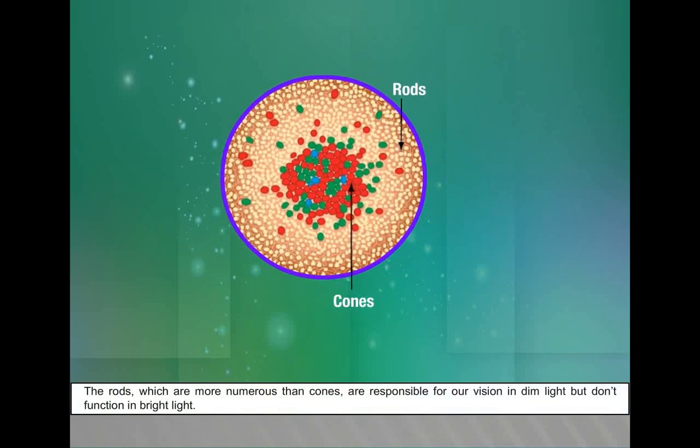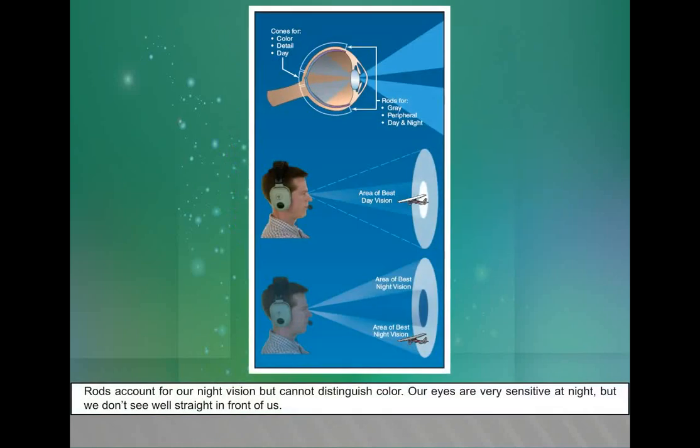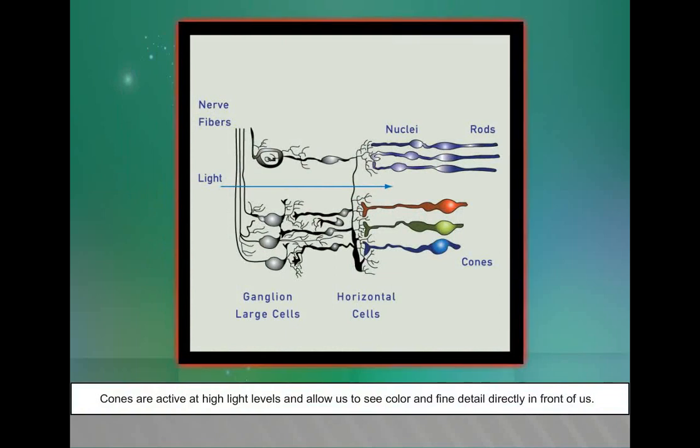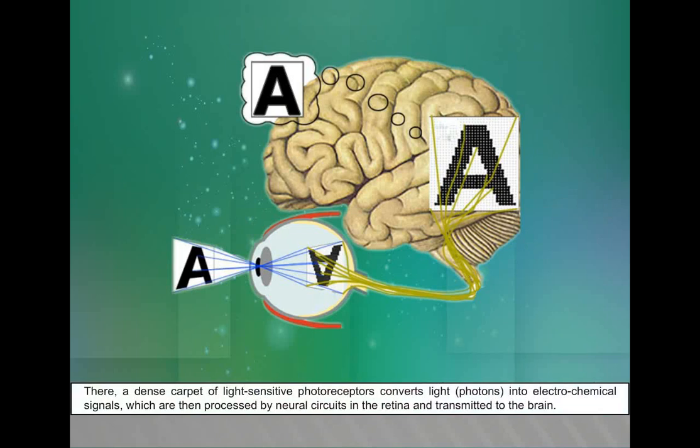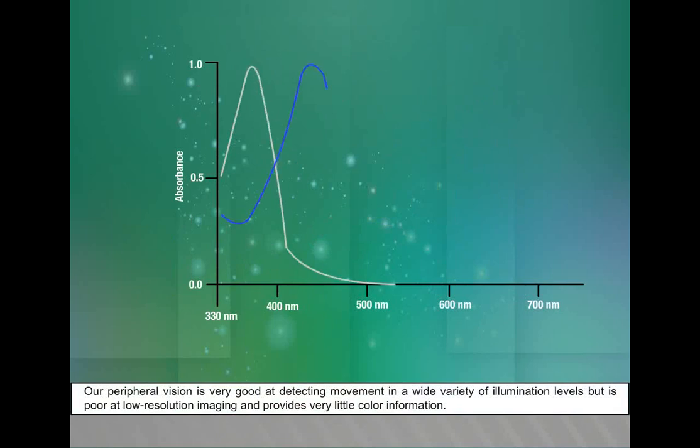The rods, which are more numerous than cones, are responsible for our vision in dim light but don't function in bright light. Rods account for our night vision but cannot distinguish color. Our eyes are very sensitive at night but we don't see well straight in front of us. Cones are active at high light levels and allow us to see color and find detail directly in front of us. The optics of the eye project an upside-down image of those objects on the rear, inner surface of the eyeball, i.e. the retina. There, a dense carpet of light-sensitive photoreceptors converts light, i.e. photons, into electrochemical signals which are then processed by neural circuits in the retina and transmitted to the brain. Our peripheral vision is very good at detecting movement in a wide variety of illumination levels but is poor at low-resolution imaging and provides very little color information.